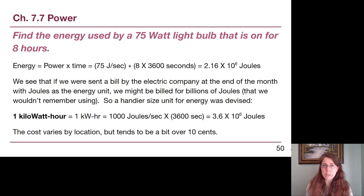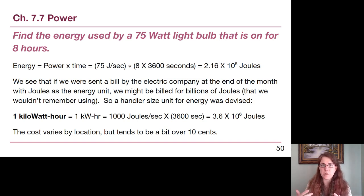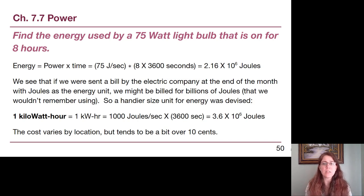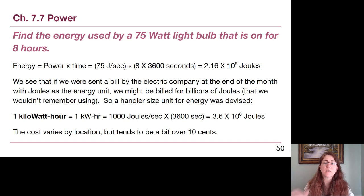No one wants a bill from their electric company saying they used millions of something — that's why the unit of kilowatt-hours was defined. Instead of watts we think in kilowatts, and instead of seconds we think in hours. A kilowatt-hour is a thousand watts times 3,600 seconds, so it equals 3.6 million joules per kilowatt-hour.